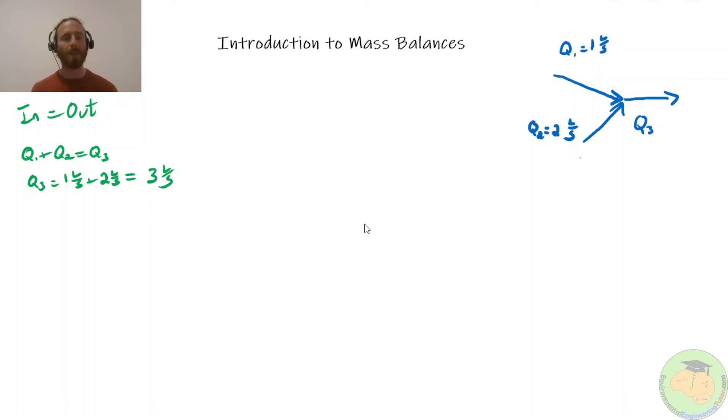Great. That's not a difficult problem. We could have managed that intuitively. So let's add a complication in here. Let's start to look at a conservative substance, so a dissolved compound that's not changing, not growing, not decaying in the system. Salt, for example. So let's give c1 the concentration of 10 grams per liter of salt. And then c2, the concentration of stream 2, can be one gram per liter.